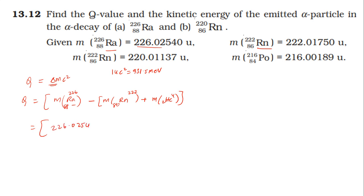Numerically: mass of Radium-226 is 226.02540, minus mass of Rn-222 which is 222.01750, plus mass of the helium nucleus which is 4.00260. This gives the mass defect value.